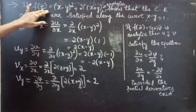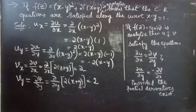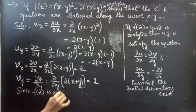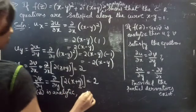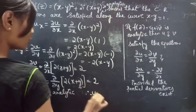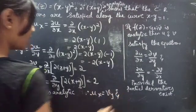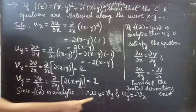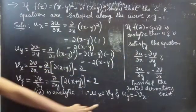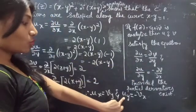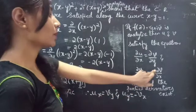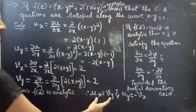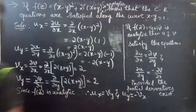Since f(z) is analytic, we get: ux = vy and uy = -vx. That is, ∂u/∂x = ∂v/∂y and ∂u/∂y = -∂v/∂x.